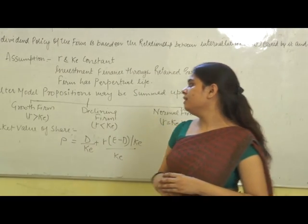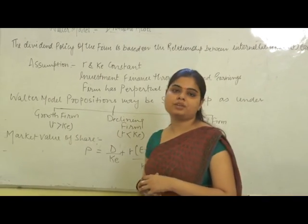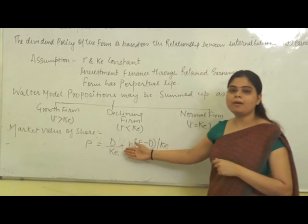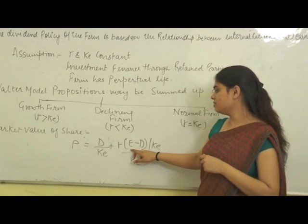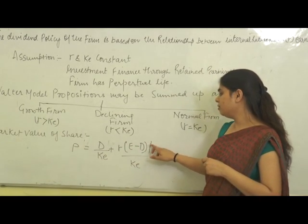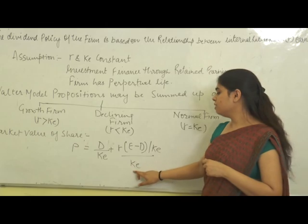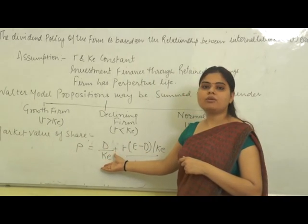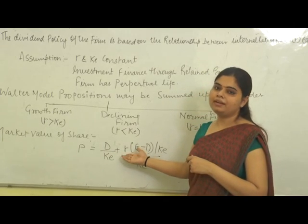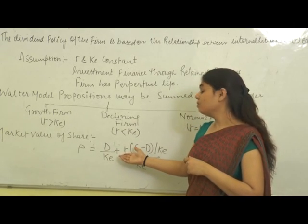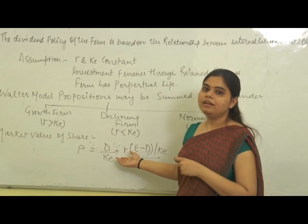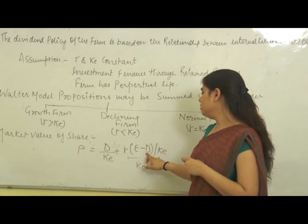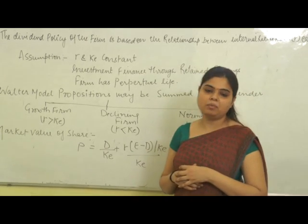With the help of the Walter model, we can also calculate the market value of share. The market value of share P is equal to: D plus R divided by KE multiplied by (E minus D), all divided by KE. Here, D denotes dividend per share, KE denotes cost of equity, R denotes internal rate of return, E denotes earnings per share, and D denotes dividend.